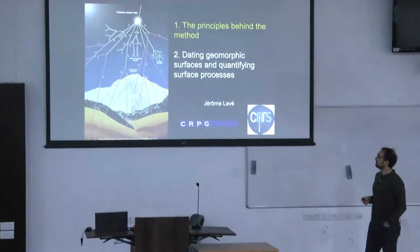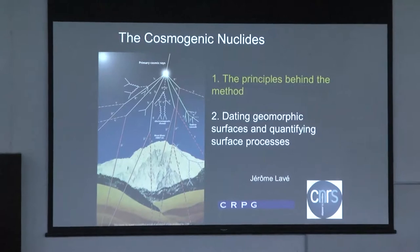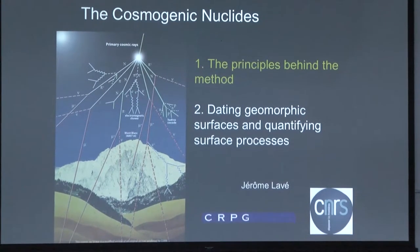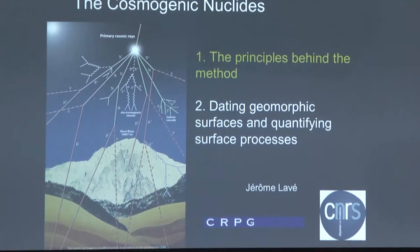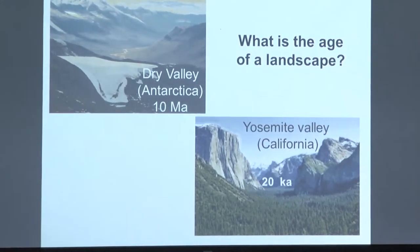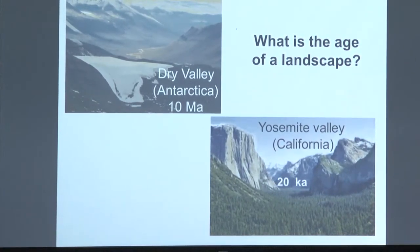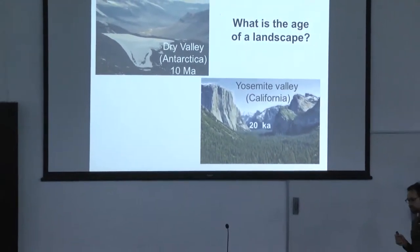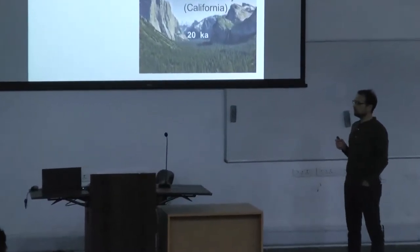I will present the great principles behind the theory and give you some insight about how it works, but also what are the limitations and the important things to have in mind when using these techniques. Having quantitative tools to measure erosion rates and the age of the landscape is very important, because for many years until the 1950s there were almost no quantitative tools to date the landscape in absolute terms.